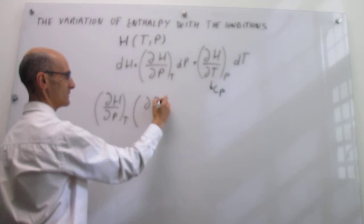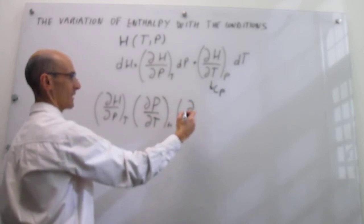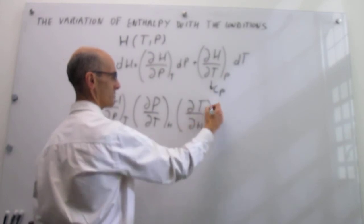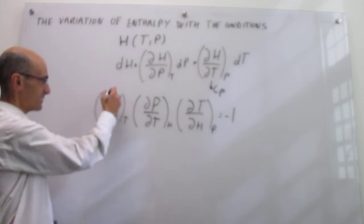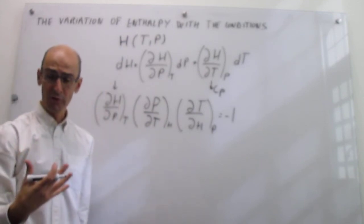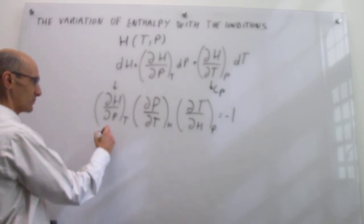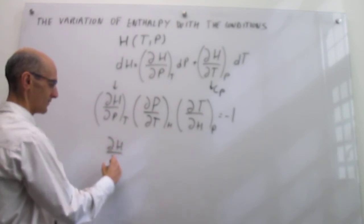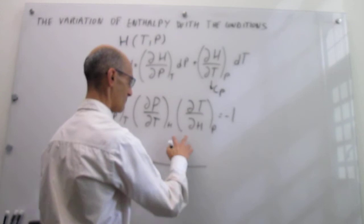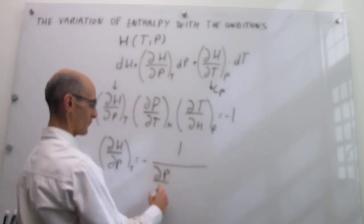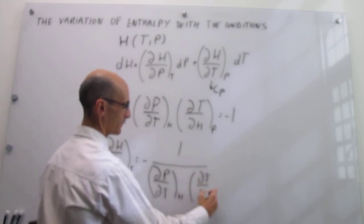The product of these three first derivatives — the derivative of H with respect to P at constant temperature, the derivative of P with respect to T at constant enthalpy, and the derivative of T with respect to H at constant pressure — is equal to minus one. Our goal is to figure out what is the meaning of these other first derivatives that appear in this expression. We are going to solve for the variation of the enthalpy with pressure at constant temperature, which is simply minus one divided by these two first derivatives.